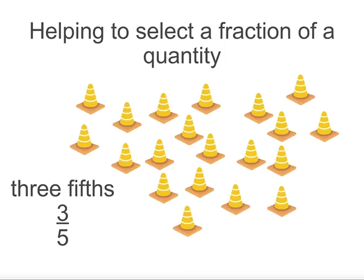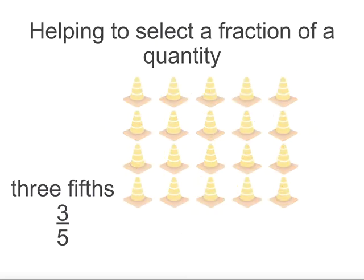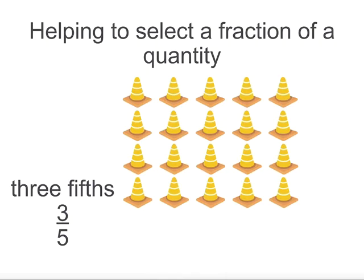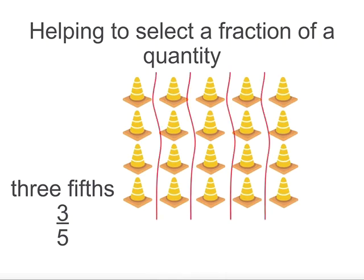If we get stuck, using arrays is a powerful way to help us solve a problem. Here there are 20 traffic cones. To help us find fifths, we can organize them into an array of five columns. Each column is 1/5 of 20. So 4 is 1/5 of 20.